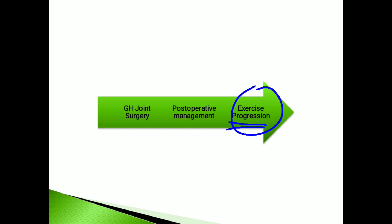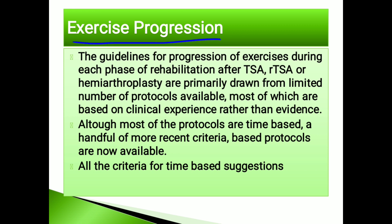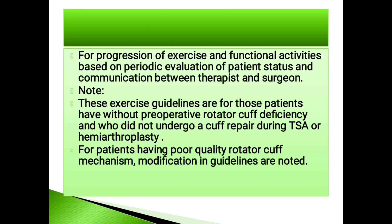The guidelines for progression of exercises during each phase of rehabilitation after total shoulder arthroplasty, reverse shoulder arthroplasty, or hemi-arthroplasty are primarily drawn from a limited number of protocols available, most of which are based on clinical experience rather than evidence. Although most protocols are time-based, a handful of more recent criteria-based protocols are now available, with criteria for time-based suggestions for progression of exercises and functional activities based on periodic evaluation of patient status.